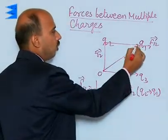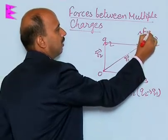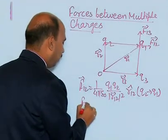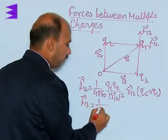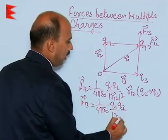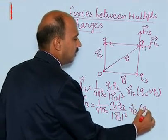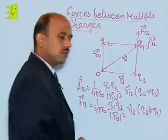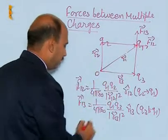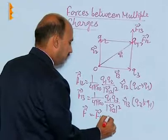Similarly, we can take force on 1 due to 3 and it will be this side here, that is F13. So we can write F13 is equal to 1 upon 4 pi epsilon naught, Q1 Q3 divided by R13 squared, R13 unit vector. Direction is from Q3 to Q1. So the total force on Q1 is given by F is equal to F12 plus F13.